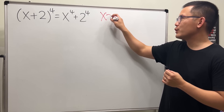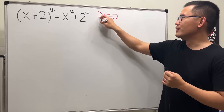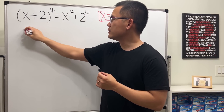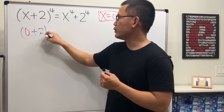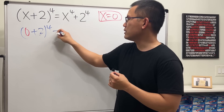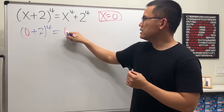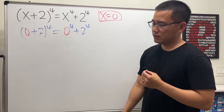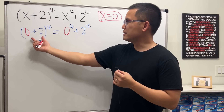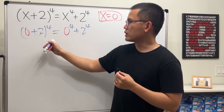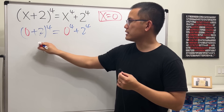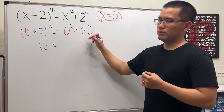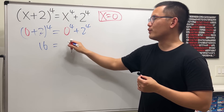I can tell you one x right away, and that is x equals zero. Because if you put zero in here, we get (0+2) raised to the fourth power, which equals zero to the fourth power plus two to the fourth power. This is just two to the fourth power, which is 16, and on the right side two to the fourth power is also 16.